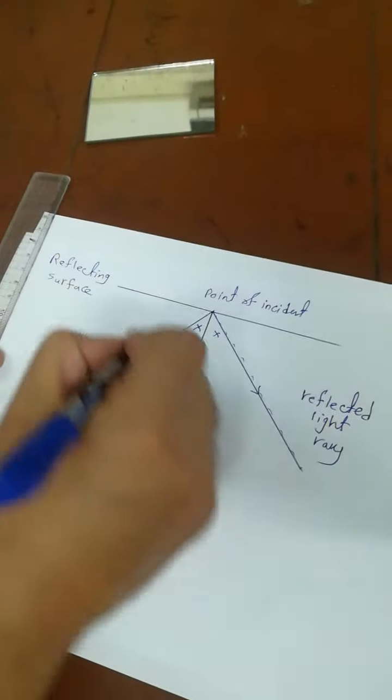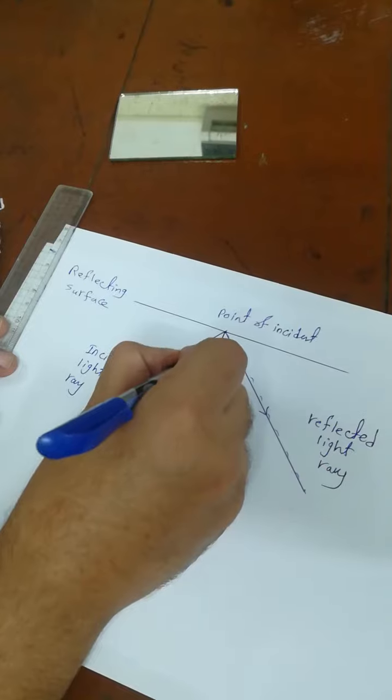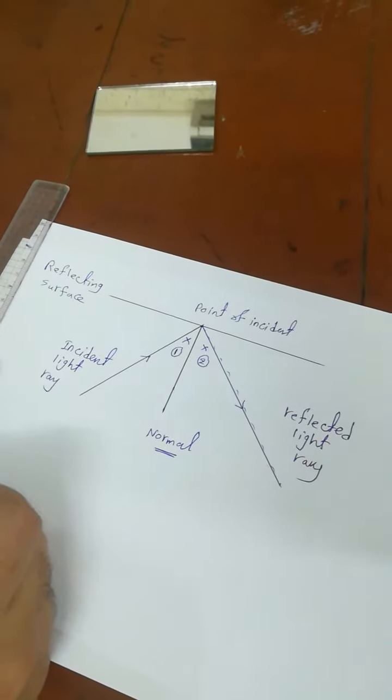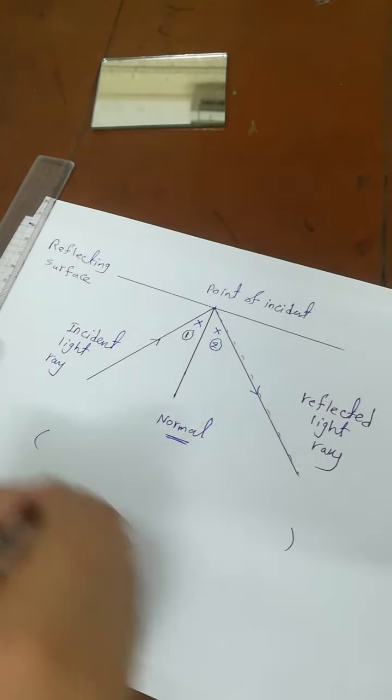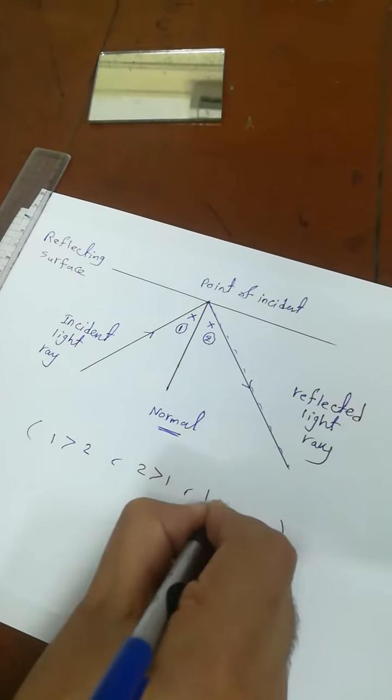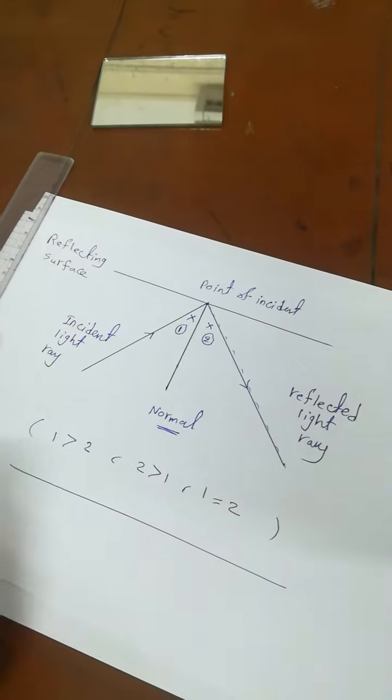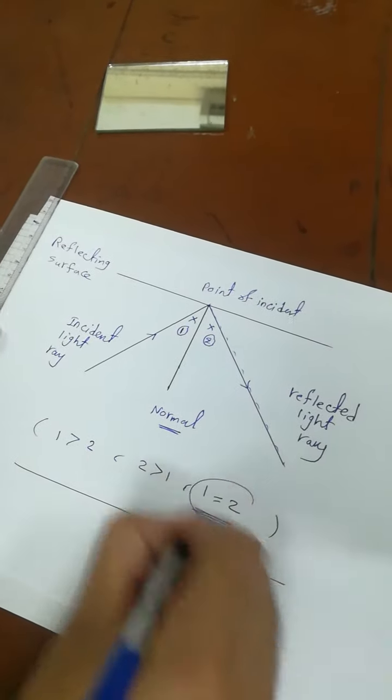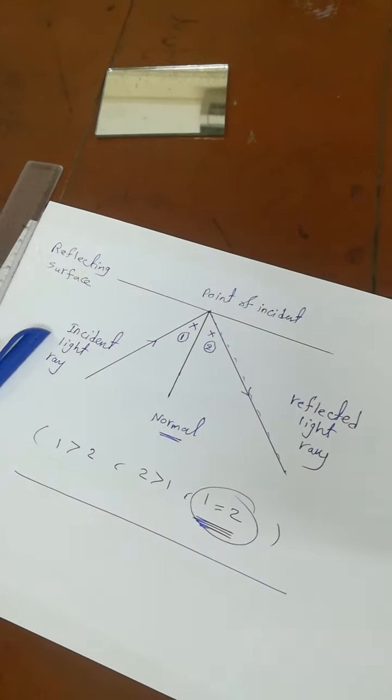We'll discuss in our session today angle number one and angle number two. Must one be greater than two, or two greater than one, or one equal to two? They must be equal.